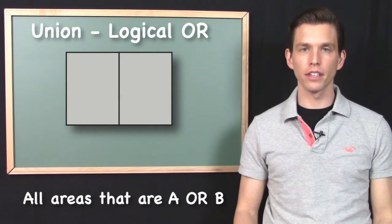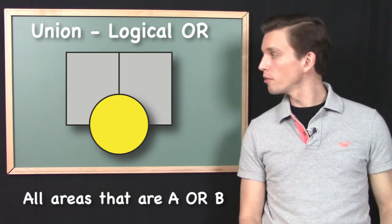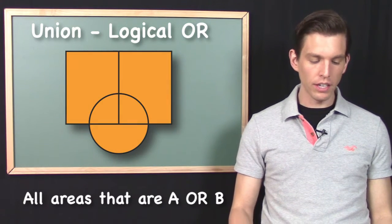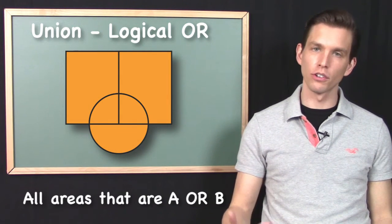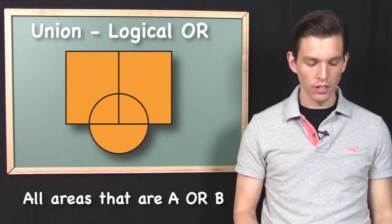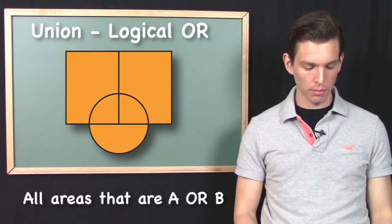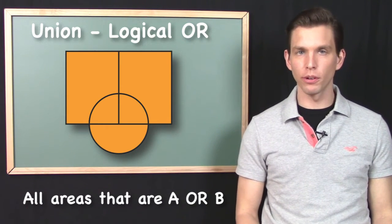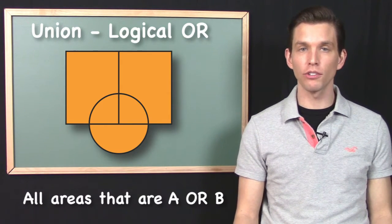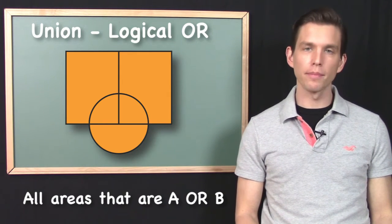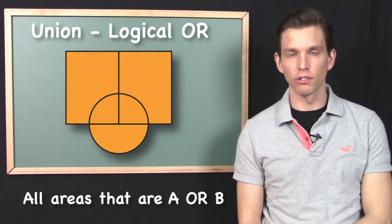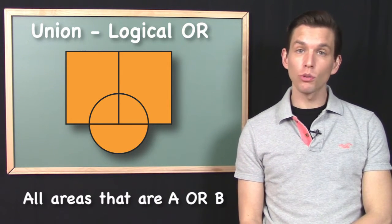Let's look at another example with different geometry — these gray rectangles and the yellow circle. The union of these two files would produce an output containing all areas that are the gray rectangles or that yellow circle. Notice how the union slices up the geometry. I had a total of three input features: two input files, one with two features and one with one feature, but my output contains five features given this geometrical configuration.